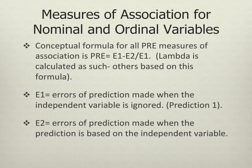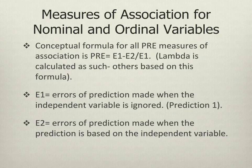This slide gives us the conceptual formula for measures of association for nominal and ordinal variables, and it's also the actual formula for lambda — the measure of association we're most likely to use if we have two nominal variables. We take the errors of prediction made when you ignore the independent variable, minus the errors of prediction made when your prediction is based on the independent variable, divided by the number of errors you would have made when you ignored the independent variable. Don't worry, I'm not going to test you on the formula.